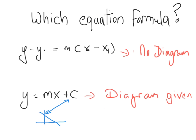If, on the other hand, you are given a diagram and you can see clearly where the line cuts through the y-axis, that means you know what c is, and you can also figure out what the slope m is. So if that's true, I would use this much quicker way of getting the equation of a line.